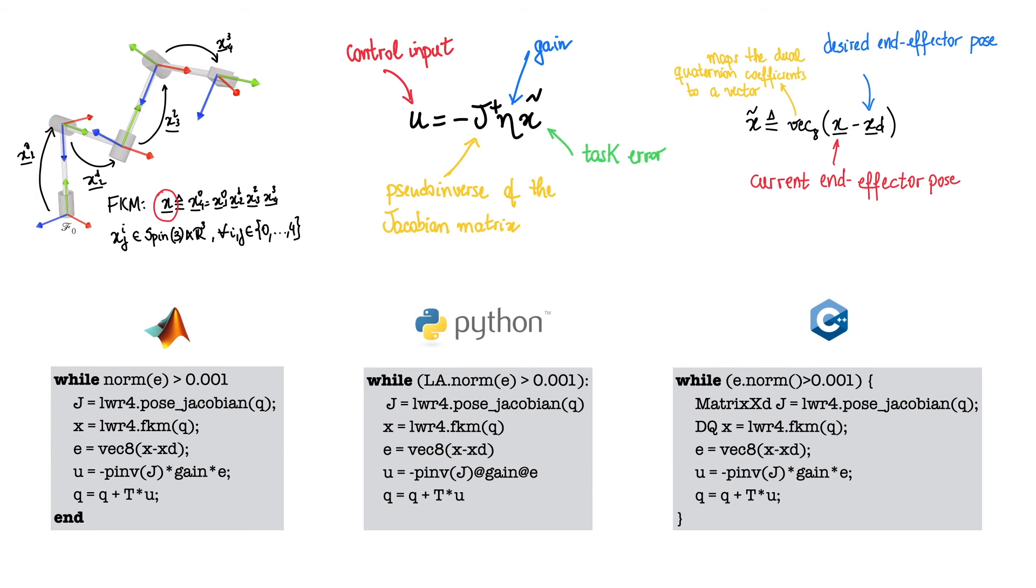MATLAB code is almost identical to Python code, and both are very close to C++. When implementing on a real robot, we replace the last line with the command to send the control signal to the robot.